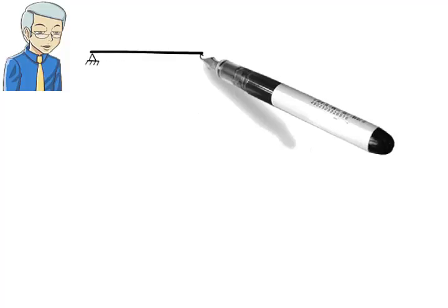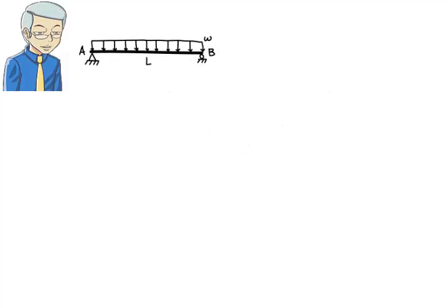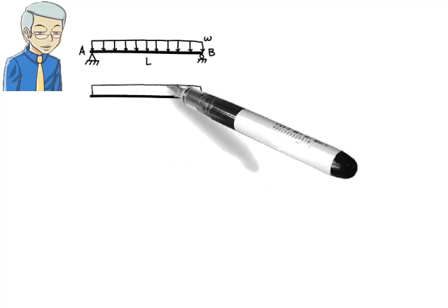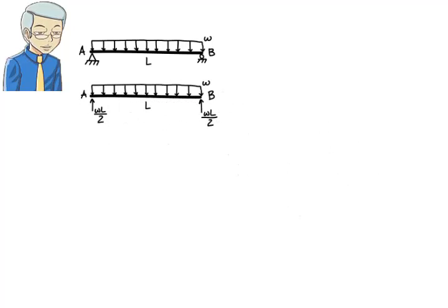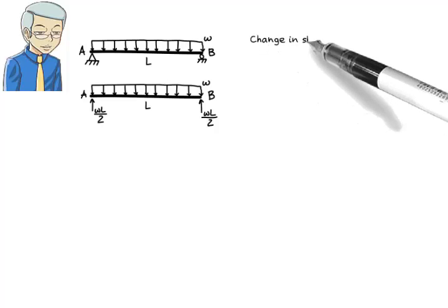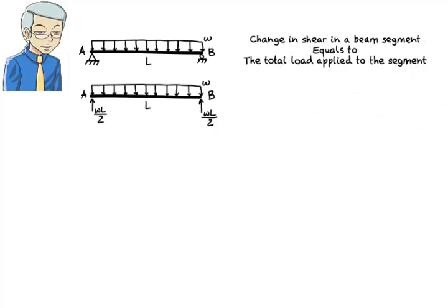Suppose we wish to construct shear and moment diagrams for a simply supported beam subjected to a uniformly distributed load. Observe that the beam has two upward reactions, each having a magnitude of WL over 2. The basic fact that enables us to draw the shear diagram directly from the load diagram is this: the change in shear in a beam segment is equal to the total load applied to the segment.